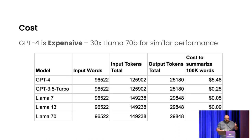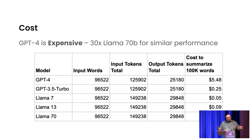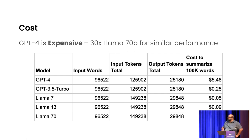The first problem is that GPT-4 is expensive — not just a little bit expensive, but really expensive compared to the options. When you compare GPT-4 to Llama 70B, it's about 30 times more expensive. We ran benchmarks on summarization. Llama 70B likes tokens much more than OpenAI does, and OpenAI's encoding is more efficient. But even if you run the math, you still find it's about 30 times more expensive.